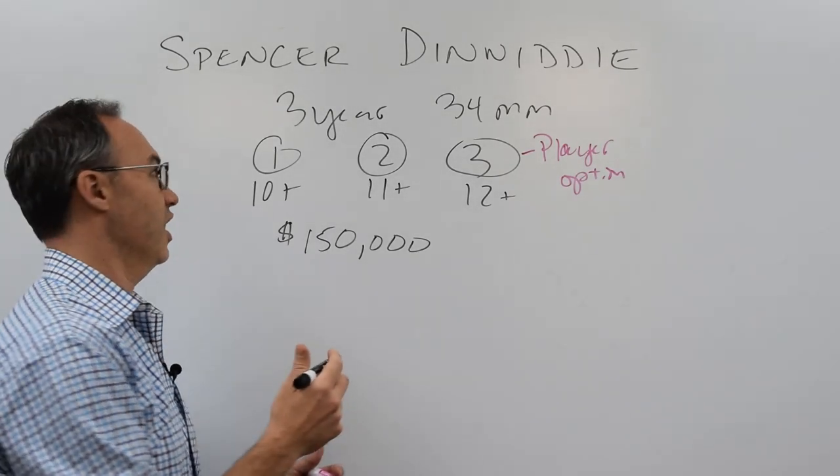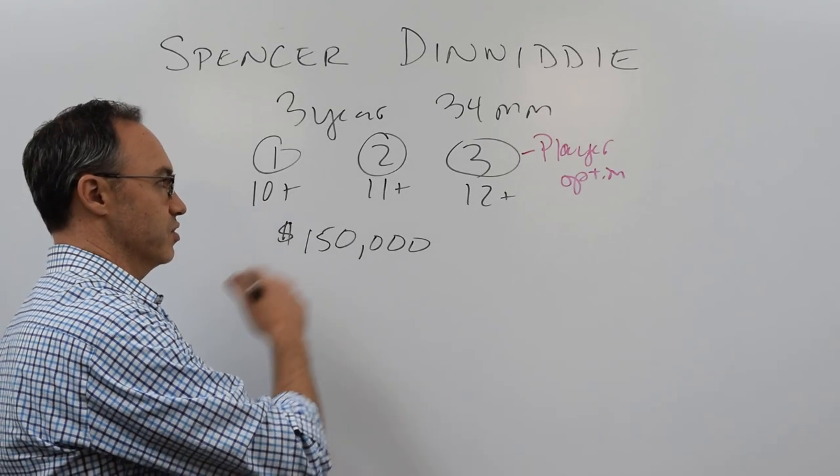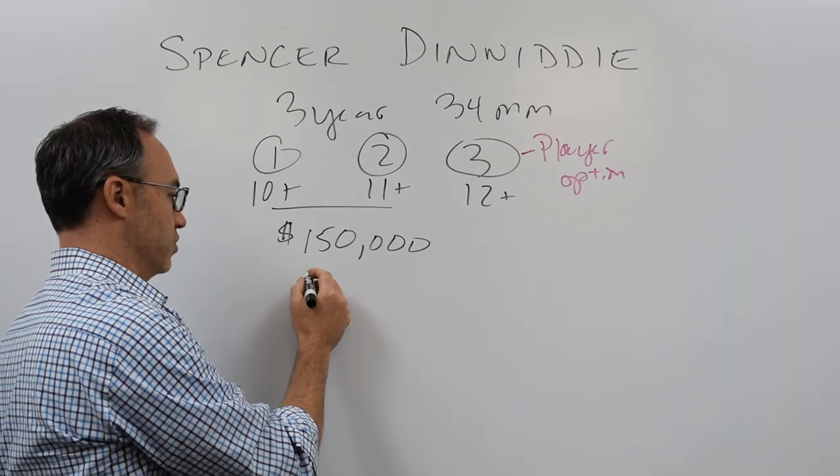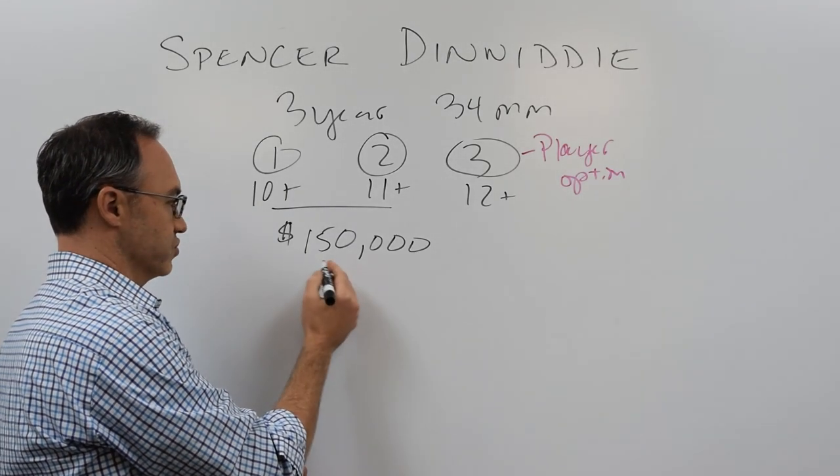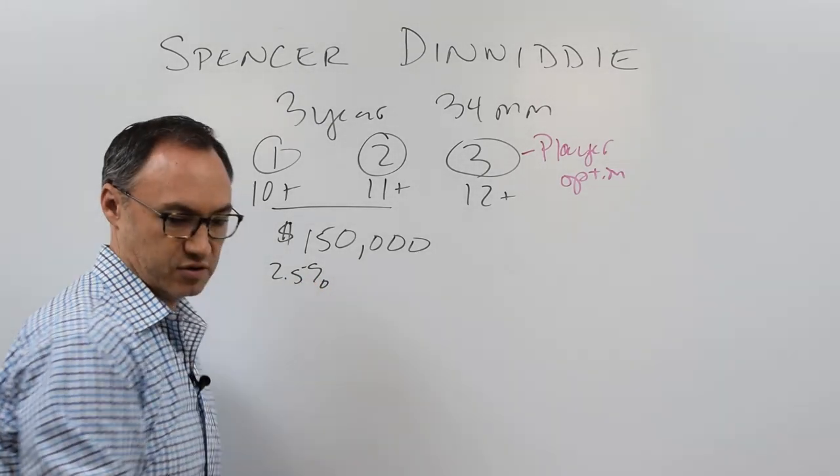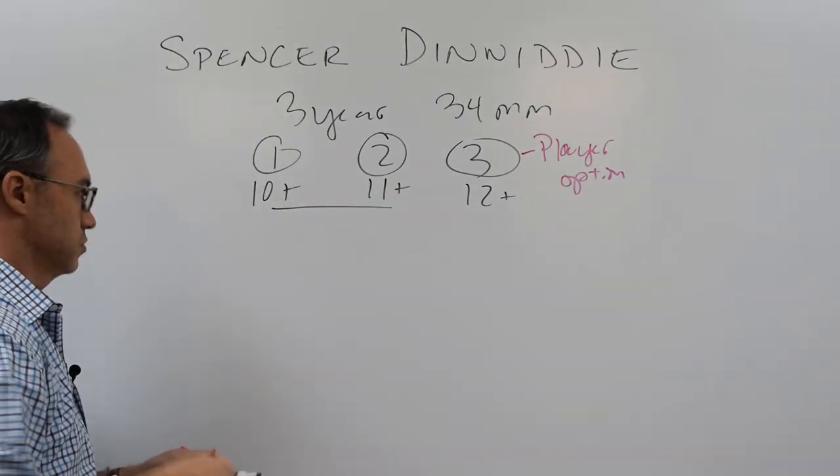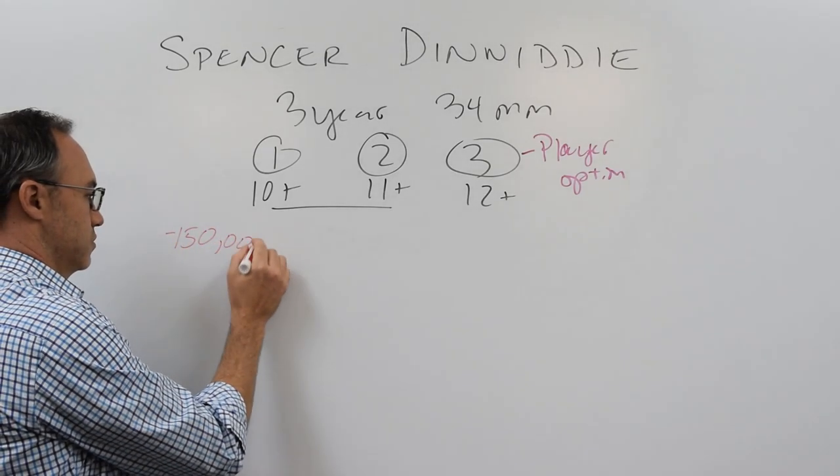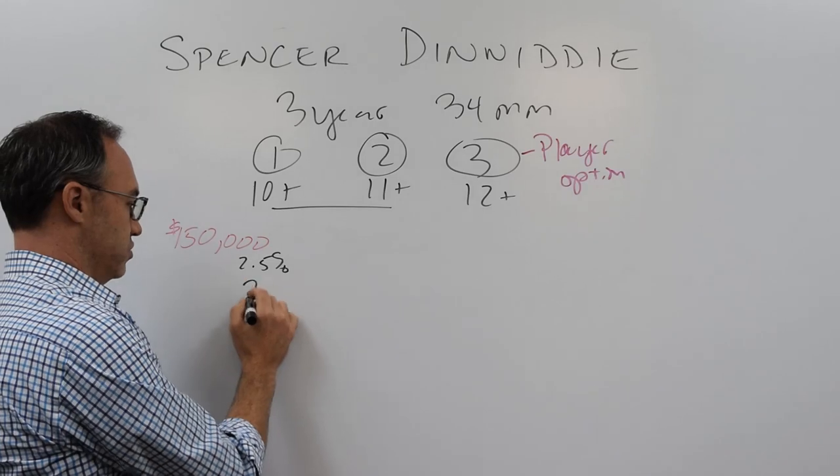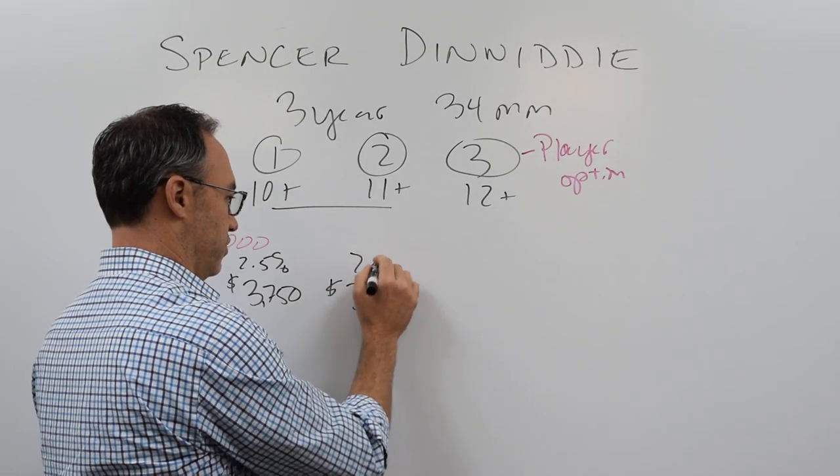Again, in the U.S., an accredited investor is someone who makes over a certain amount of money and has a certain amount of net worth above and beyond their home. And the accredited investor rules there, again, from the government, from the SEC, to say only people who can afford to lose the money are allowed to invest in some of these riskier investments. So this is not available to everybody. This is only available to accredited investors. The minimum you can invest is $150,000, right? And $150,000 buys you pretty much one share.